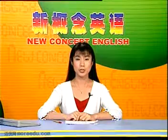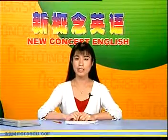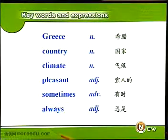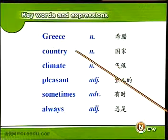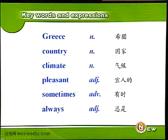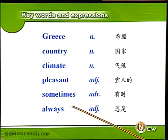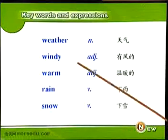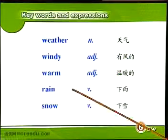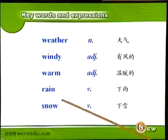是的，希腊有的时候在冬天下雪。你答对了吗？好，一起来看本课的关键词和词组。Keywords and expressions: Greece, country, climate — climate指的是长时间的气候特征。Pleasant, sometimes, always, weather — weather指的是短时间的天气状况。Windy, warm, rain, snow.